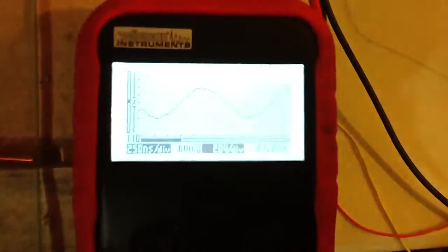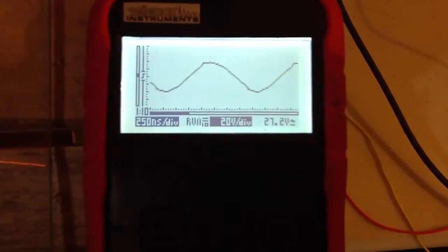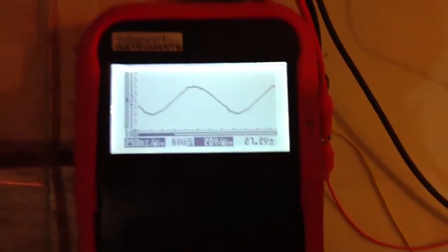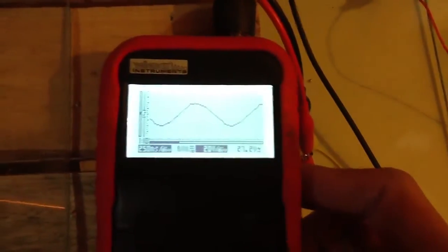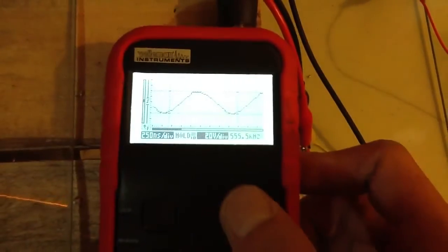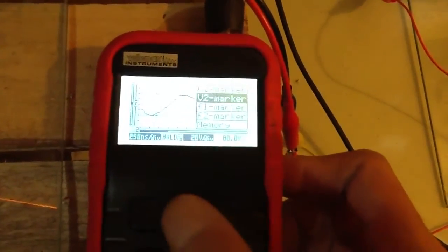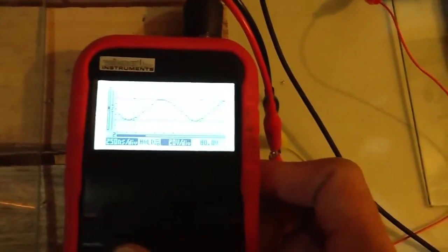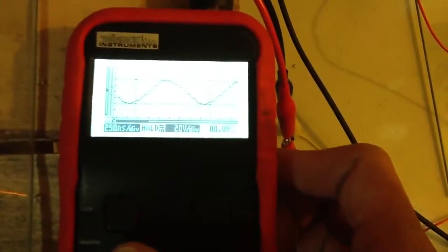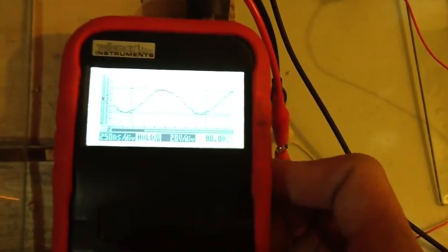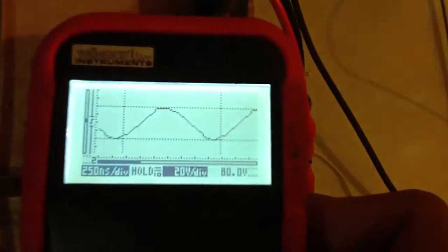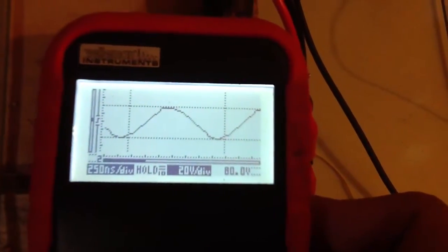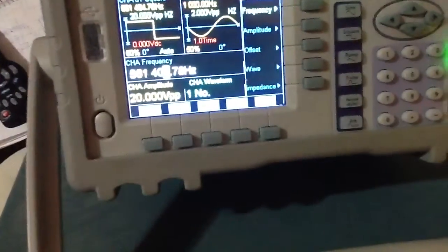We've got 27.2 volts RMS, 80 volts peak to peak. Where before we have 20 volts peak to peak.